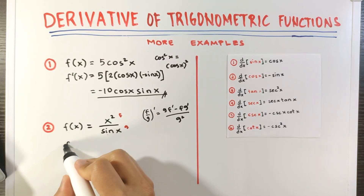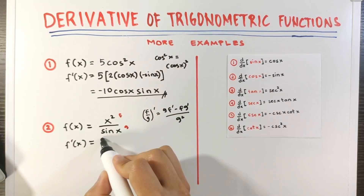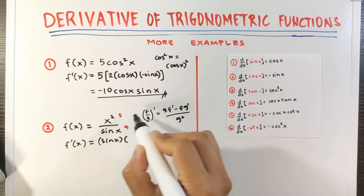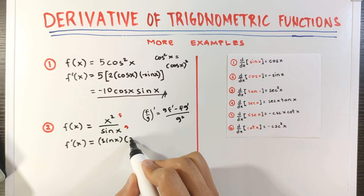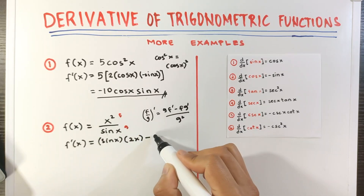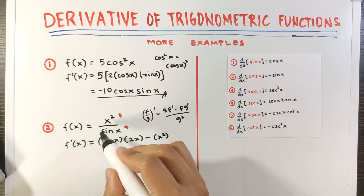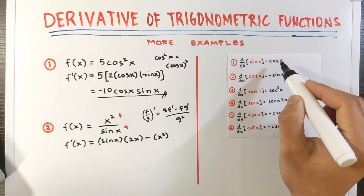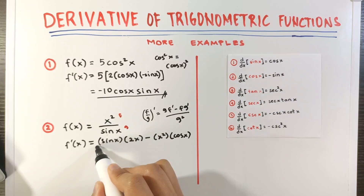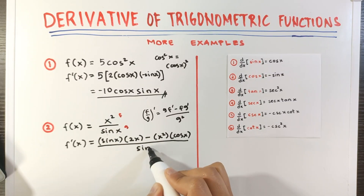So f prime of x is equal to: copy g, which is sine x, multiplied by the derivative of the numerator — the derivative of x squared is 2x — minus the numerator x squared, multiplied by the derivative of the denominator. The derivative of sine is cosine, so we have times cosine x. Then divided by the square of the denominator, so sine squared x.